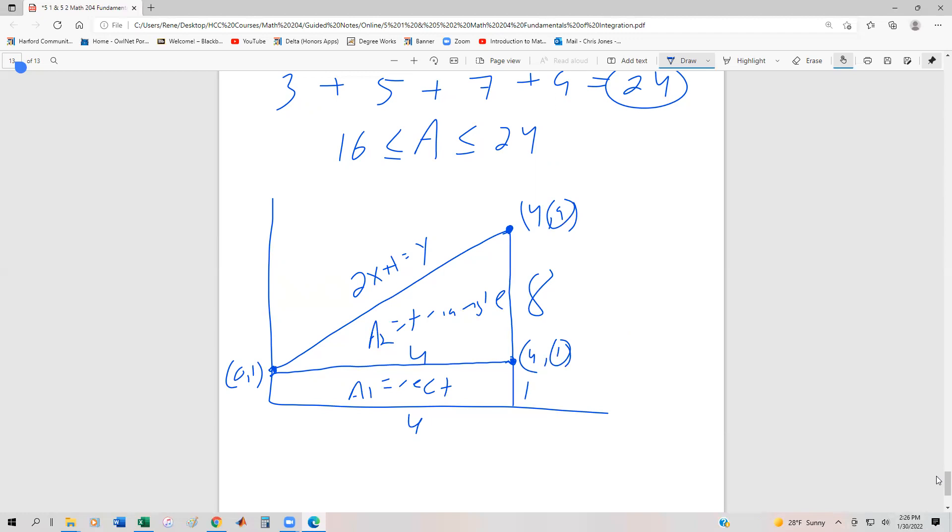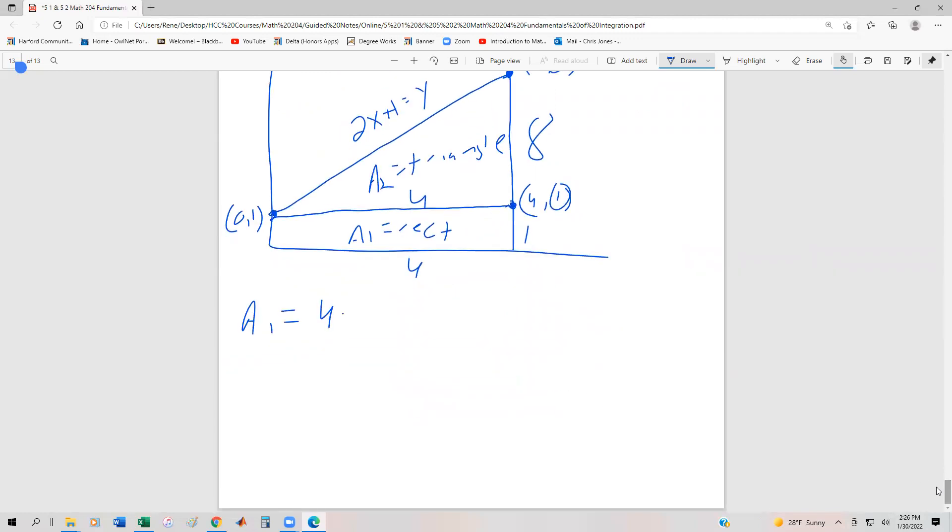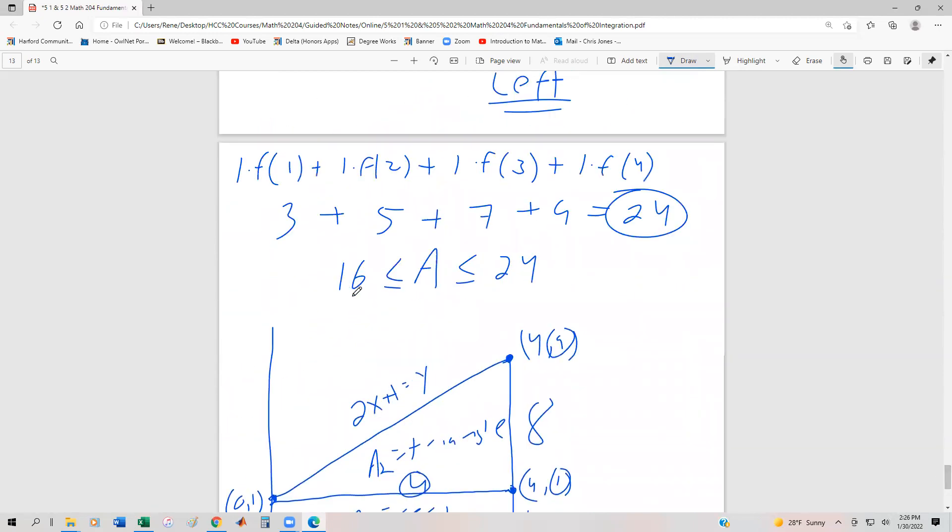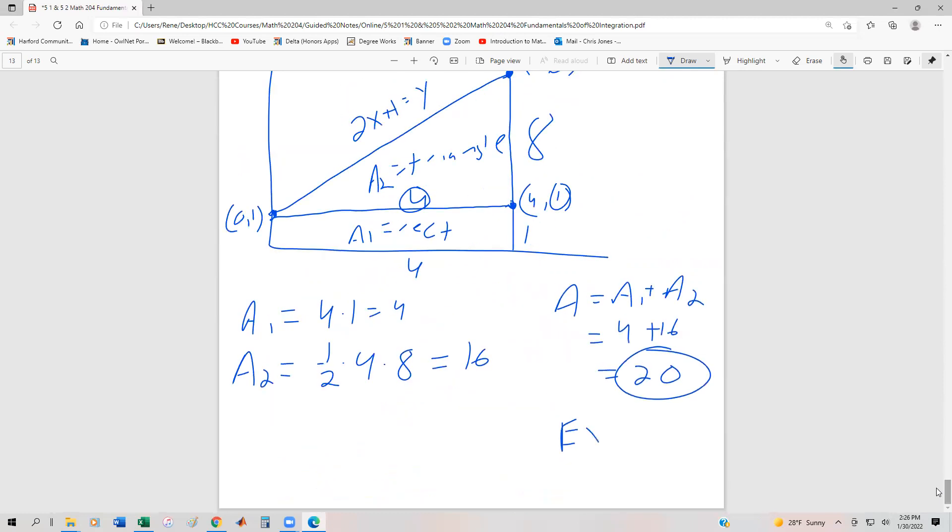Area 1 equals 4×1 = 4. Area 2 equals ½×4×8 = 16. If we add these together, A = A₁ + A₂ = 4 + 16 = 20. Does 20 make sense? Well, we said earlier it should be somewhere between 16 and 24, and 20 is precisely halfway between 16 and 24. This is the exact area.